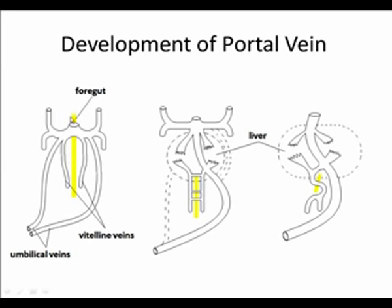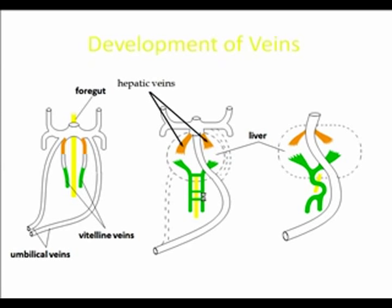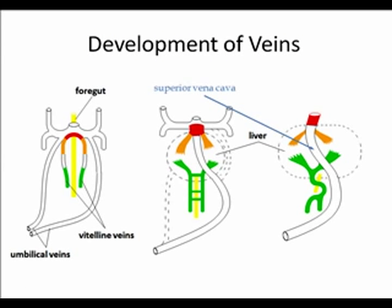The portal vein develops from the vitelline veins, which form anastomoses and come together to create the portal vein. The proximal vitelline veins form the hepatic veins, and the vitelline vein cells in between are broken up to give rise to the sinusoids of the liver. The hepatic veins connect with the right vitelline vein to empty into the inferior vena cava.